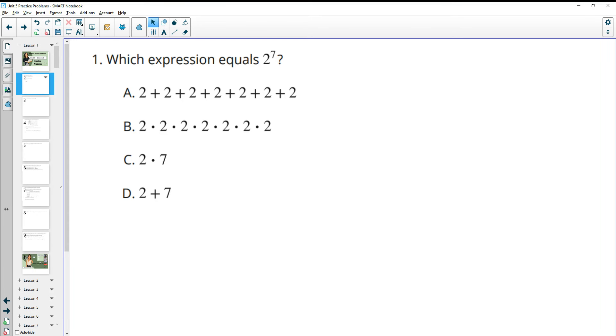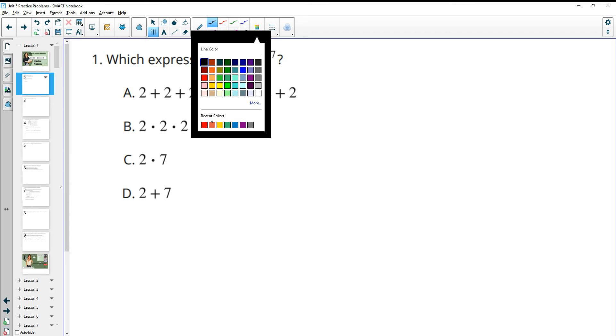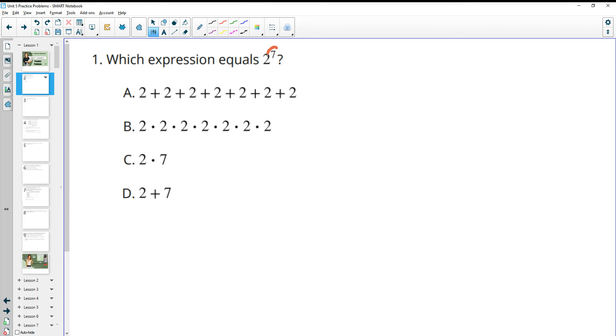Number 1 asks us which expression equals 2 to the 7th power. We know that exponents mean repeated multiplication. This number is how many times the base is a factor, and factor means multiplication. The base is this bottom number 2, so that means we're going to have that base multiplied 7 times. That's b.